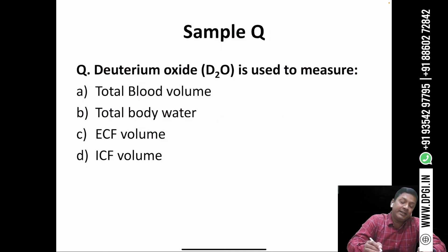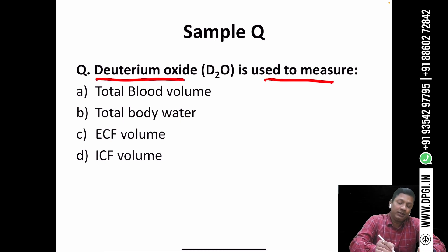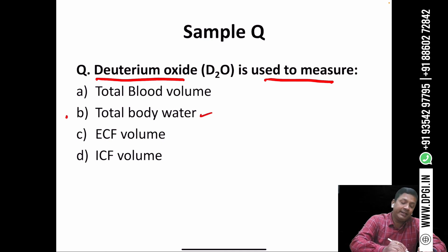Another question: 'Deuterium oxide is used to measure?' As discussed, deuterium oxide is used to measure total body water, so the answer is B. Thank you for watching this video. If you like this video, please subscribe and share. Thank you very much.